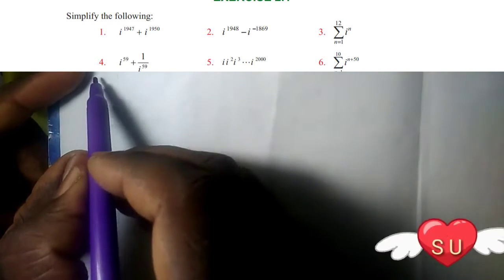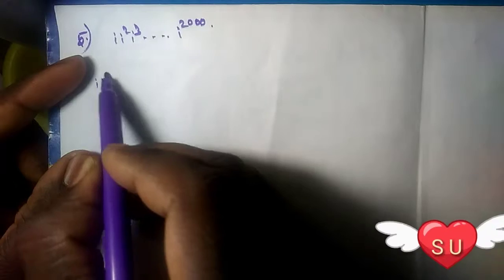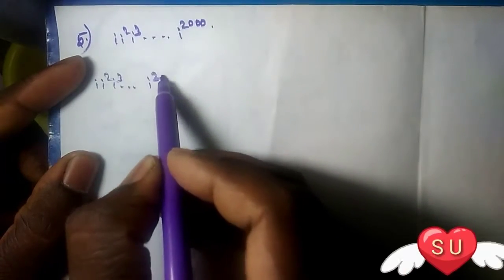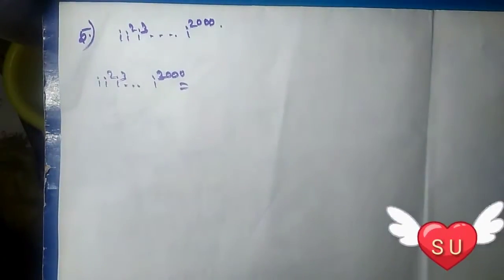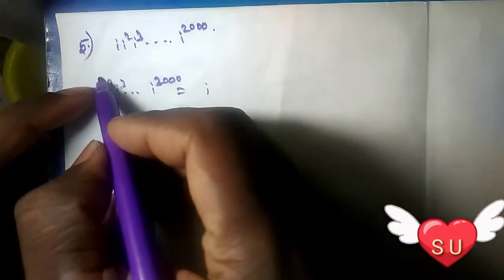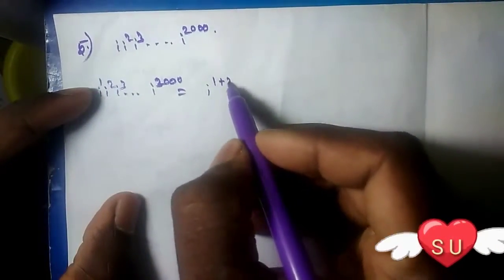So I will show you how to solve it. i + i square + i cube up to i power 2000. I will show you how to write it.